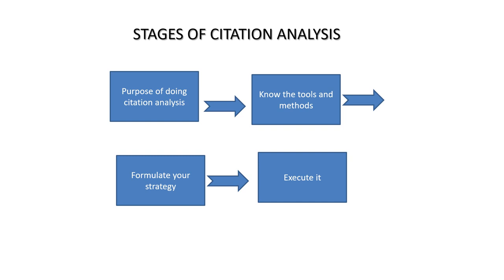These are the stages of citation analysis. The first stage is the purpose of doing citation analysis — whether you go for citation analysis, an empirical paper, or a review paper. From these three alternatives, you should justify the purpose of citation analysis. Know the tools and methods — it is not an easy task, and there are many softwares available. Next is to formulate your strategy and execute it.